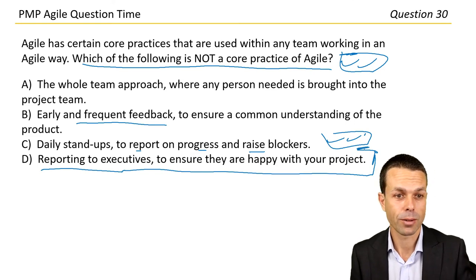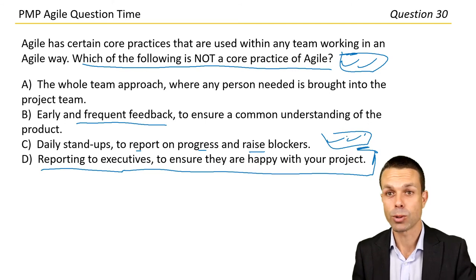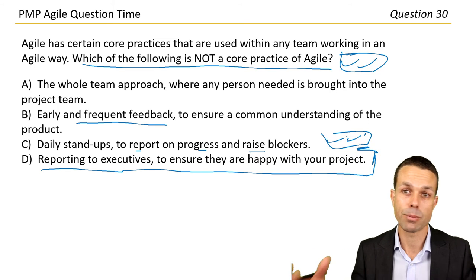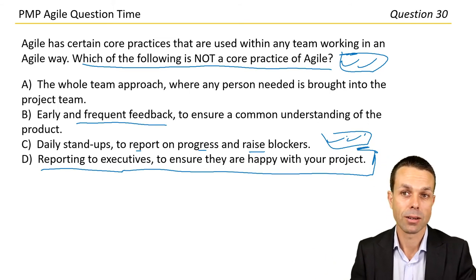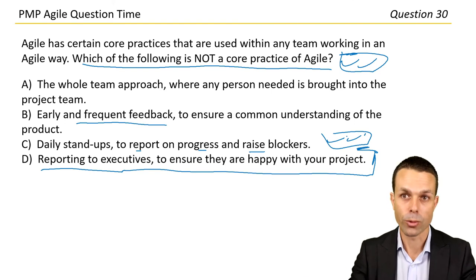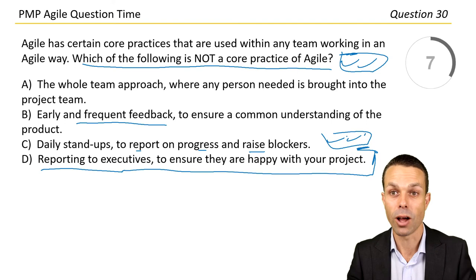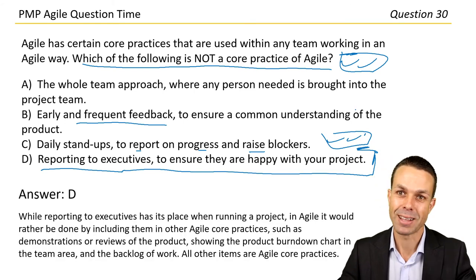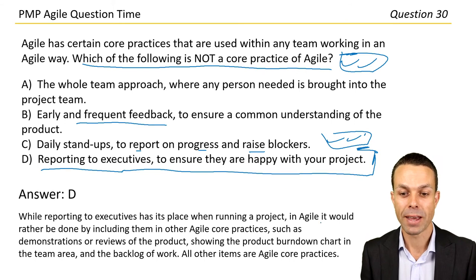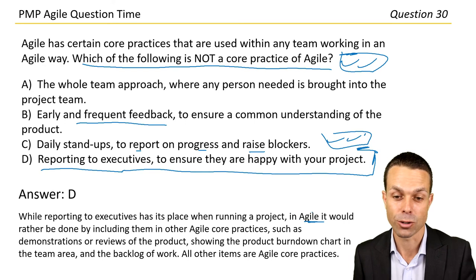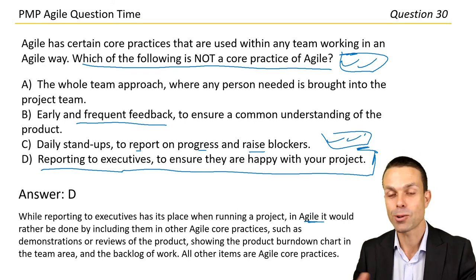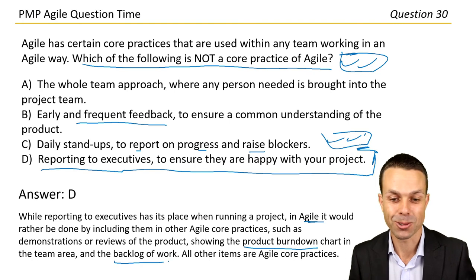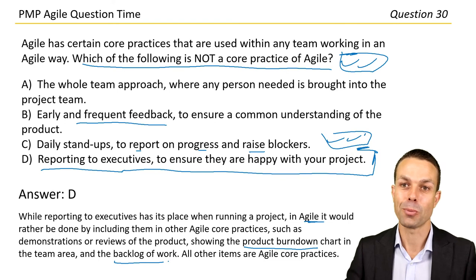Answer D — reporting to executives — is not a direct core agile practice. In agile, reporting is done differently: all information such as burndown charts, the product backlog, and delivery plans are made visible to anyone who wants to see them, whether in a physical team area or online via a page like Confluence. Demonstrations or reviews are how executives are typically included.